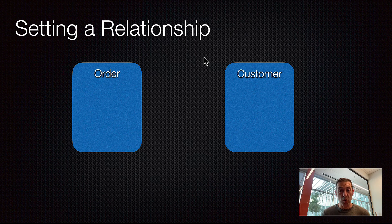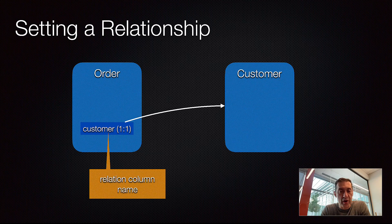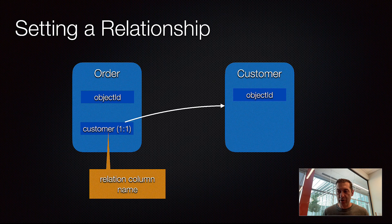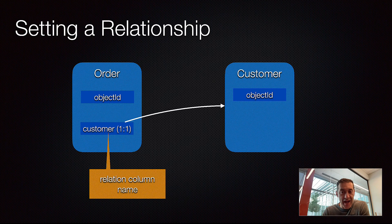Consider that we have two tables, order and customer, and these two tables are related through a relation column called customer. Let's say it is a one-to-one relation — this just declares the structure. The actual objects inside these tables may not be related yet, and the API that I will describe is responsible for establishing that link. There are four pieces of information that you need when you use the API to set a relationship.